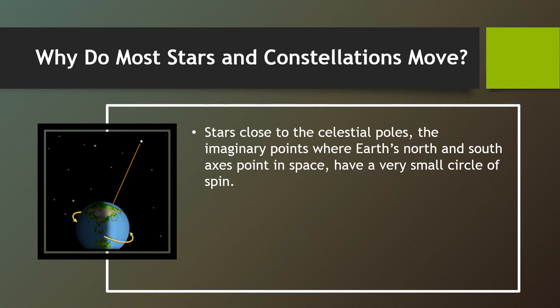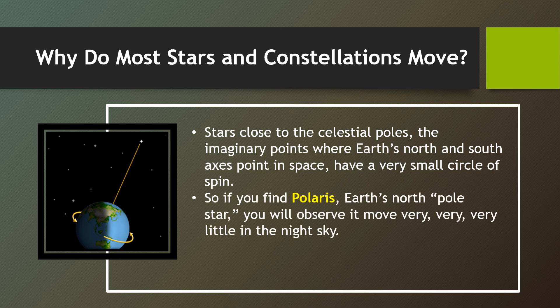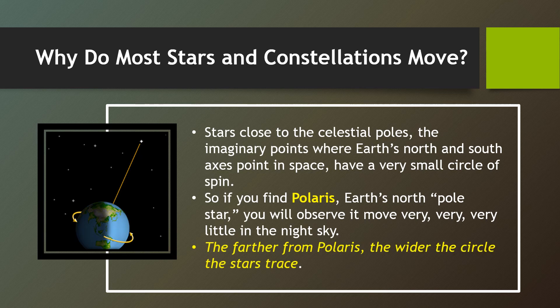Stars close to the celestial poles — the imaginary points where Earth's north and south axis point in space — have a very small circle of spin. So if you find Polaris, the Earth's north pole star, you will observe it move very little in the night sky. The farther from Polaris, the wider the circle the stars trace.